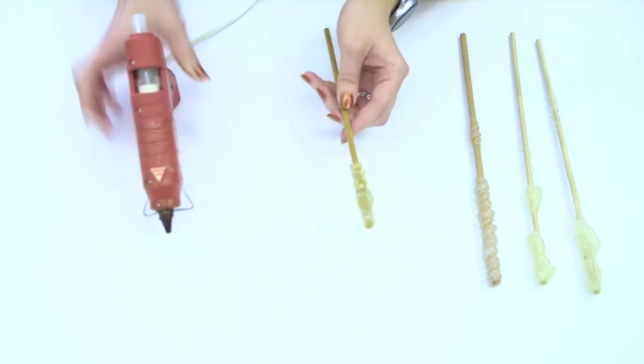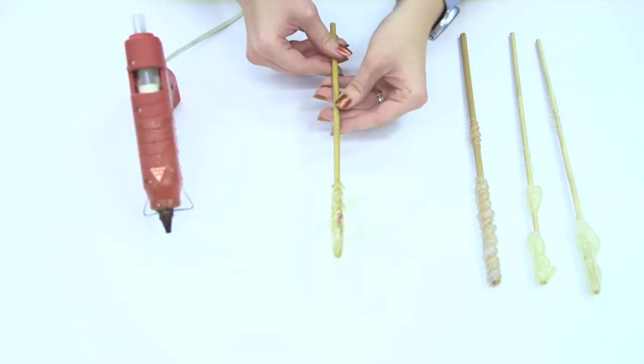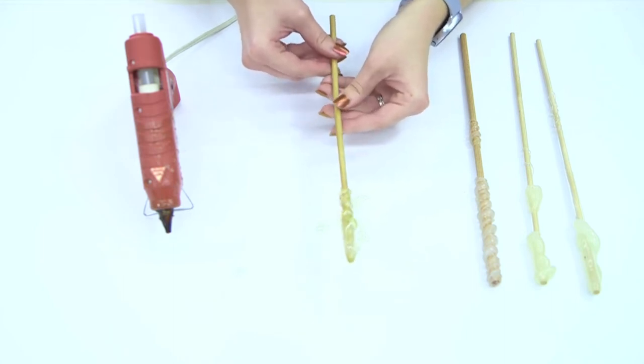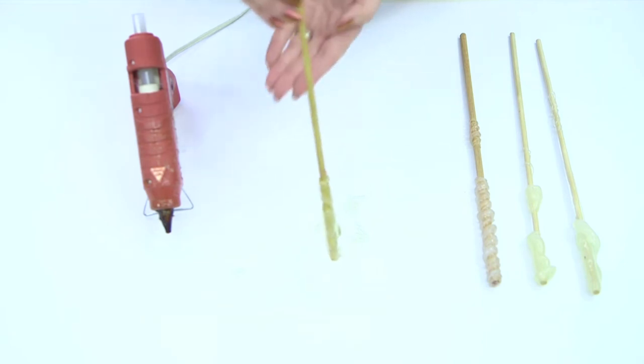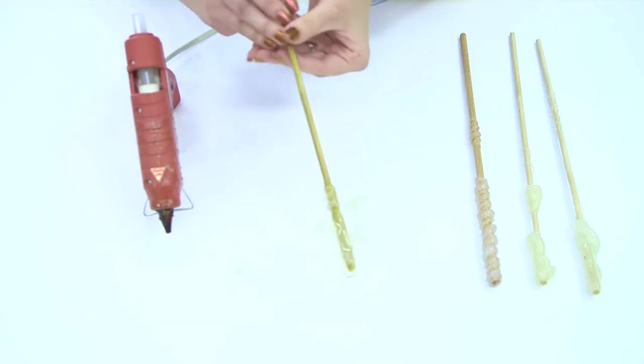And then we're just going to take this and kind of rotate it just so it doesn't all fall to one side. You can hold it at this end facing down so you can get some at the very end here.